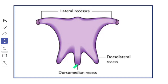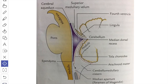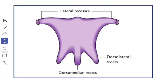Next, we'll see the median dorsal recess. It extends into the white core of the cerebellum, just above (cranial to) the nodule. In this picture, you can see the median dorsal recess which extends into the white core of the cerebellum just above the nodule. Then there are two lateral dorsal recesses, one on each side of the median dorsal recess.